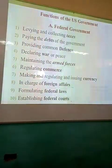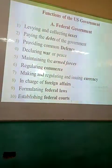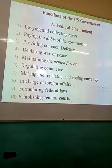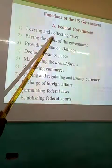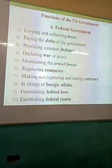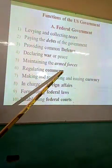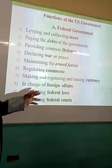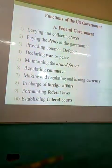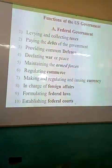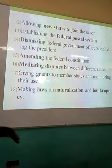Functions of the U.S. government operate at two levels: the federal government and state governments. The federal government levies taxes, pays foreign debts, provides common defense, declares war or peace, maintains the armed forces, regulates commerce, and regulates the issuance of U.S. currency — the dollar. It is in charge of foreign affairs and formulates federal laws, including establishing federal codes.